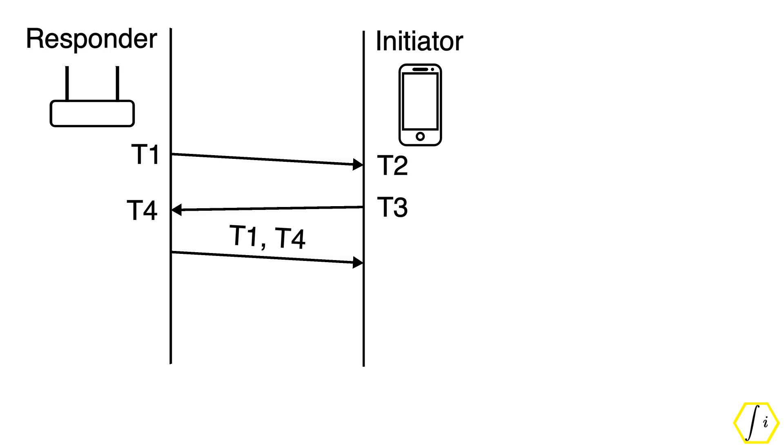Finally, the responder shares the measured T1 and T4 to the initiator in another frame. The initiator then computes the round trip time using this equation. Once the RTT is known, the range can be determined by multiplying half the RTT with the velocity of light.